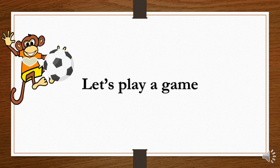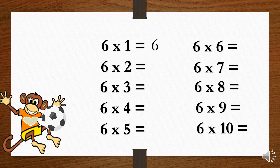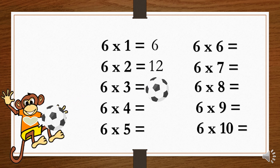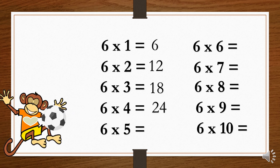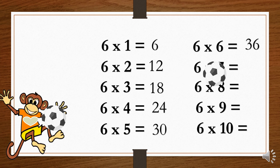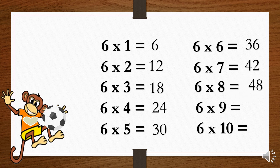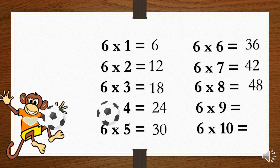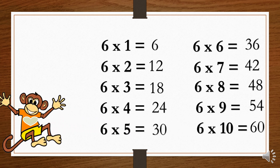Let's play a game. 6×1=6. 6×2=12. 6×3=18. 6×4=24. 6×5=30. 6×6=36. 6×7=42. 6×8=48. 6×9=54. 6×10=60.